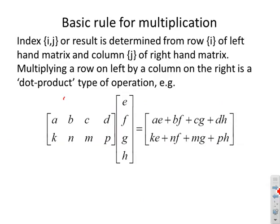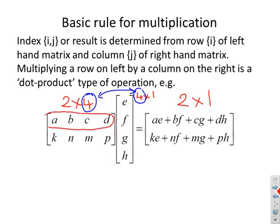Here's an example: the left-hand matrix is 2×4 and the right-hand matrix is 4×1. The column dimension of the left-hand matrix matches the row dimension of the right-hand matrix — both are 4. The dimension of the result is 2×1, taking the row dimension from the left and the column dimension from the right. The first row of the result comes from the first row of A times the column of B: ae + bf + cg + dh. The second row gives ke + nf + mg + ph.